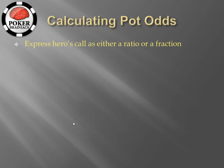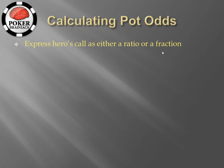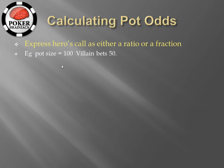How do we calculate our pot odds? Firstly we need to express hero's call as either a ratio or a fraction. The standard method you will see used on forums and strategy books is to express this as a ratio. I prefer to express these terms as fractions, because I find it easier to visualize the amount of equity you need to make a call with a fraction than with a ratio. The main reason ratios are still used is because of their history in the gambling industry.